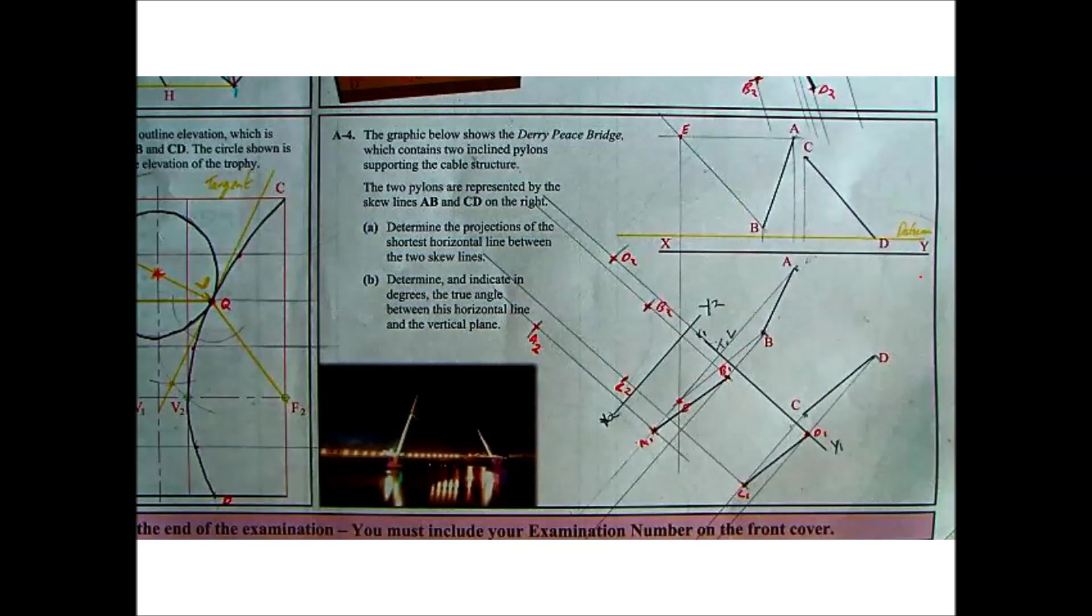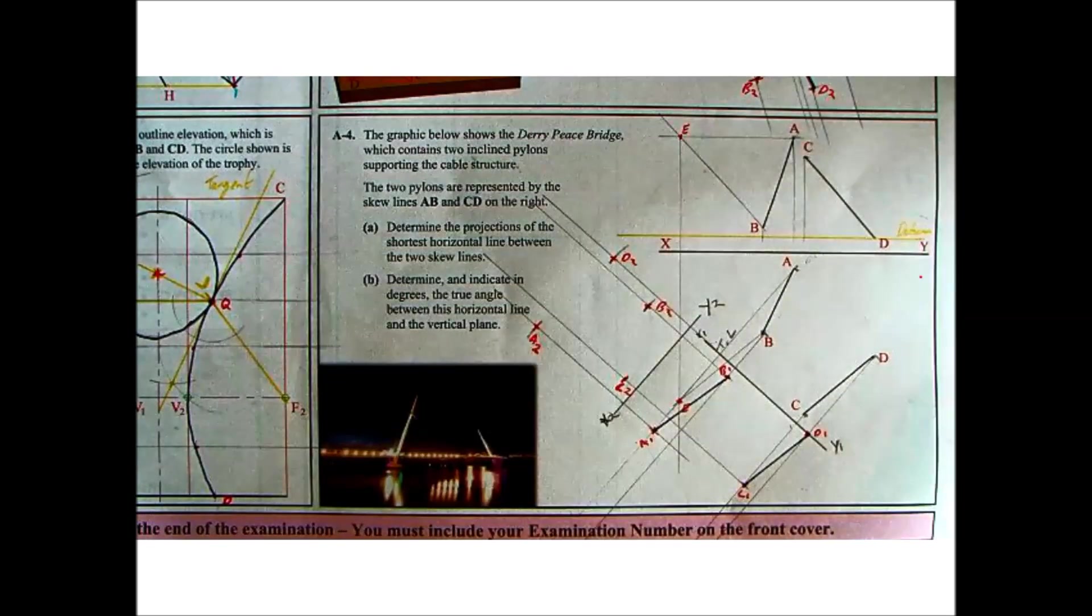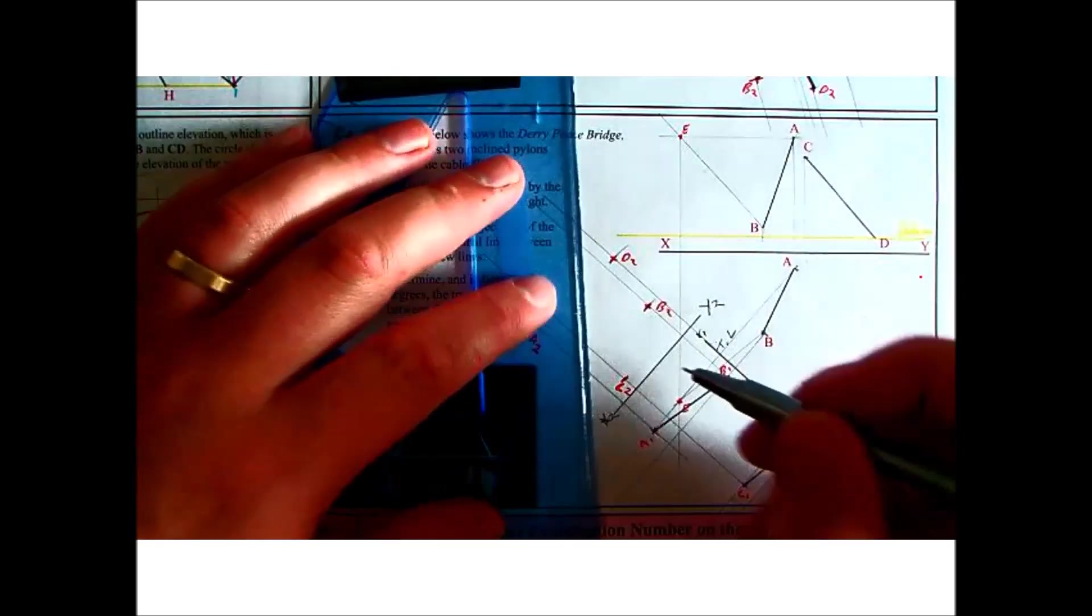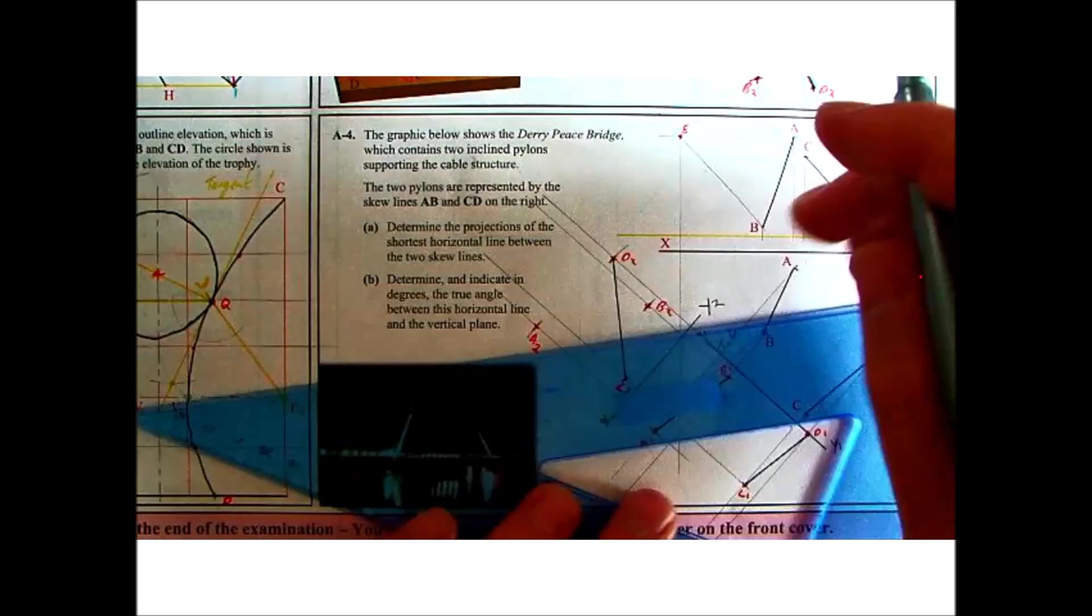So if we join them up now here in plan, or sorry, in the second view, they should cross. So again, it's A, B and C, D. So join in C, D and A, B.